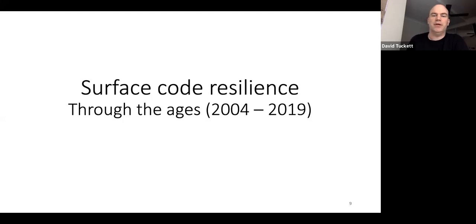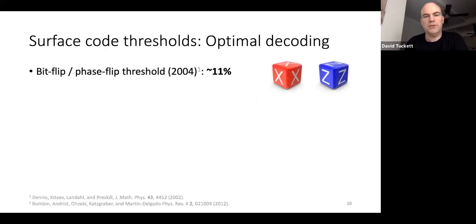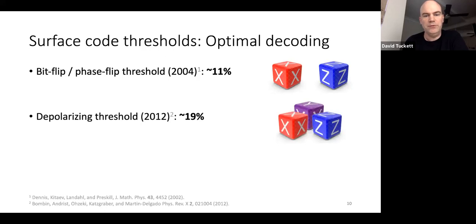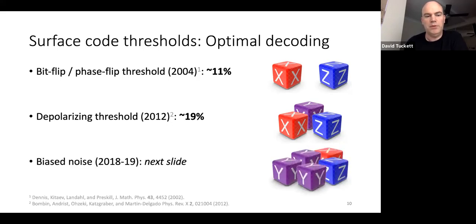Here's a brief history of surface code resilience — by which I mean optimal thresholds assuming perfect measurements and ideal optimal decoding. In 2004, Dennis and colleagues, by mapping the surface code to a statistical mechanical model, found an optimal threshold of 11% for the CSS surface code or toric code — a high threshold that's attracted wide interest. In 2012, Bombin and colleagues found the threshold for depolarizing noise was around 19% using a similar statistical mechanics mapping. More recently, we've been looking at bias noise thresholds.